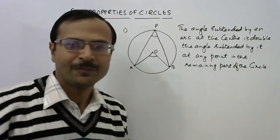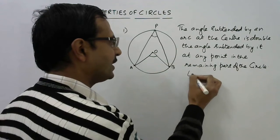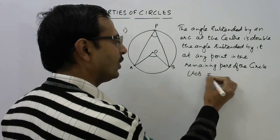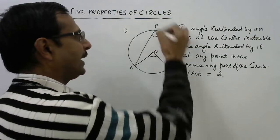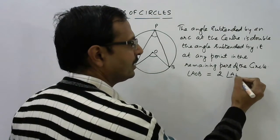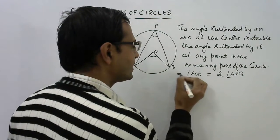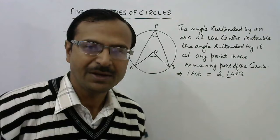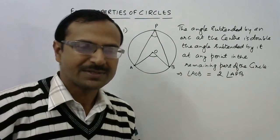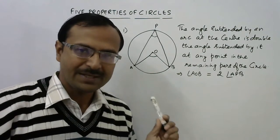In this figure, angle AOB which is subtended at the center will always be double angle APB which is subtended in the remaining part of the circle. This is a very important property for solving questions related to circles.